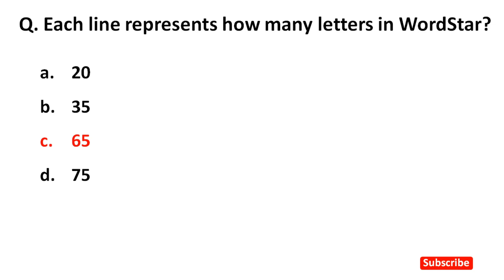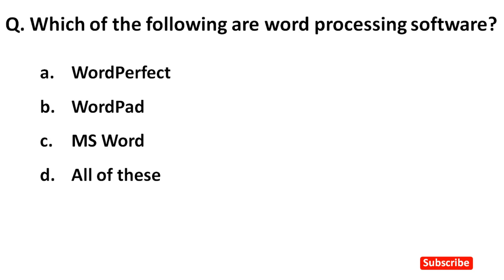Next question. Which of the following are word processing software? Right answer is option D — All of these.